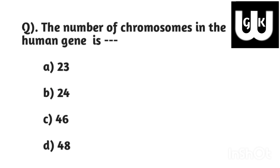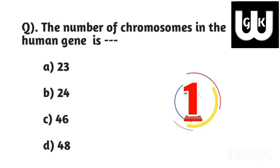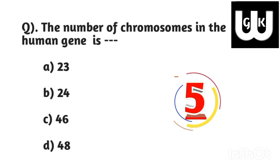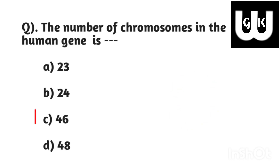The number of chromosomes in the human body is? Answer C: 46.